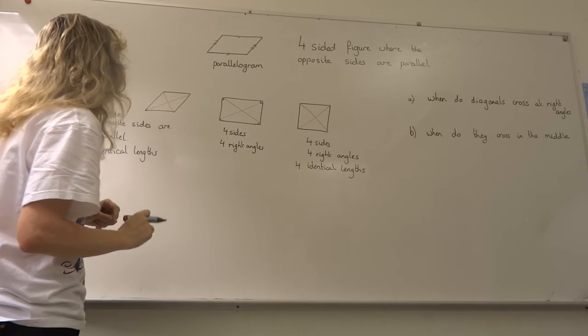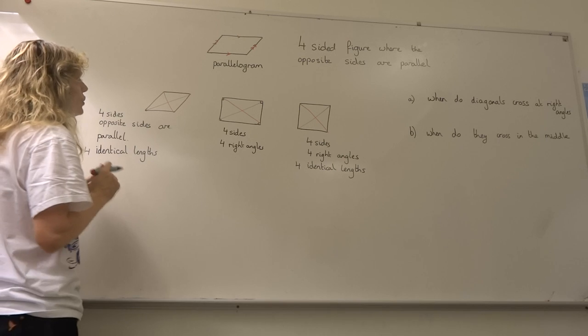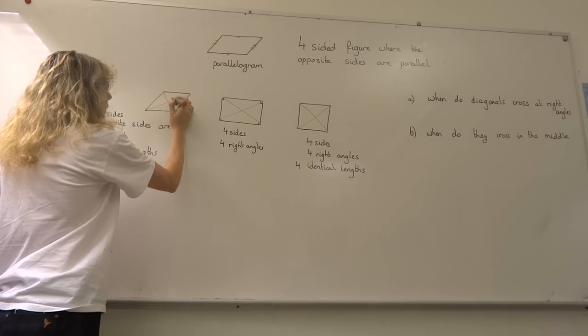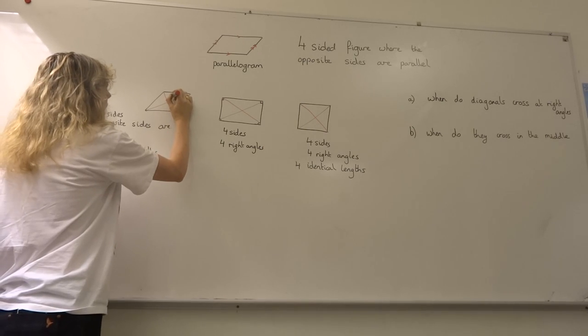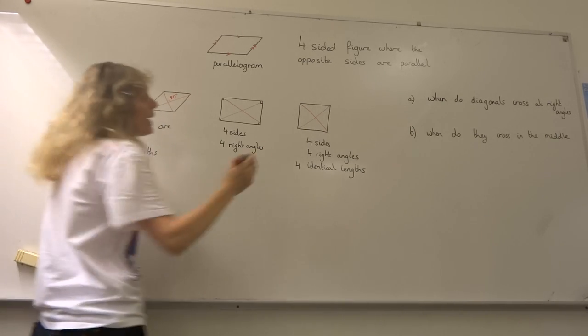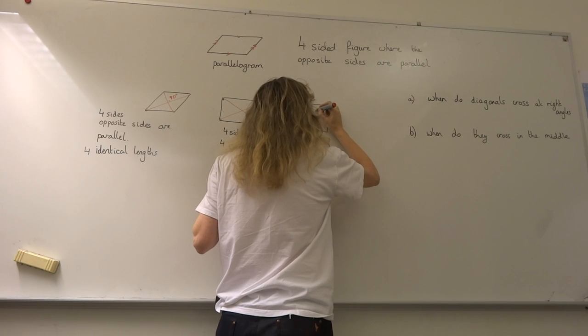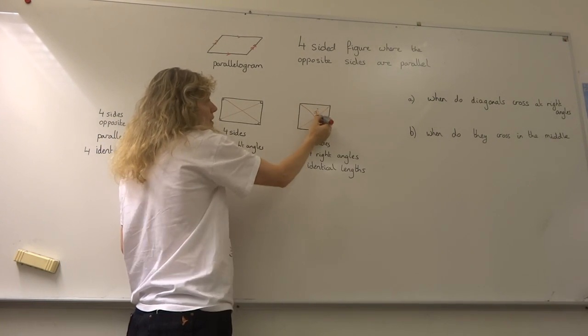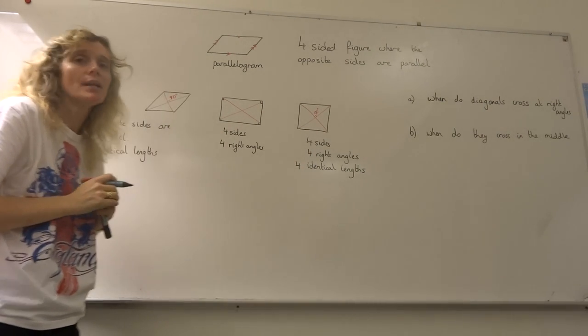You'll be able to see that for the rhombus, the angle here when you measure with your protractor will be 90 degrees, and for your square, going from this diagonal to this down, they'll meet in the middle at a 90-degree angle—perpendicular.